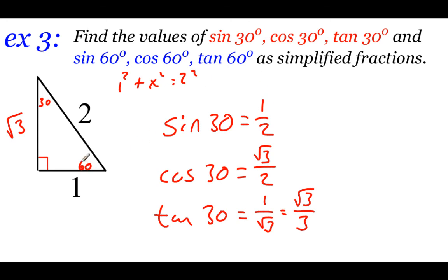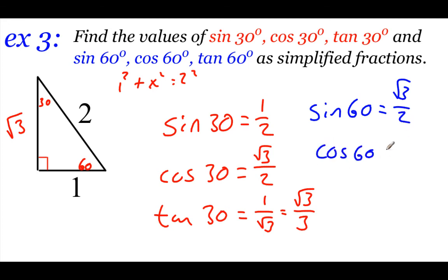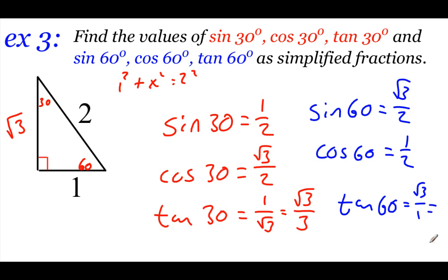For the 60° angle: sine of 60° is opposite over hypotenuse = √3/2. Cosine of 60° is adjacent over hypotenuse = 1/2. Tangent of 60° is opposite over adjacent = √3/1, which reduces to just √3.